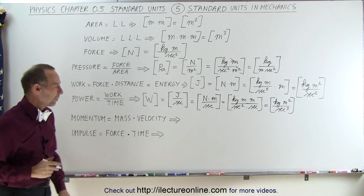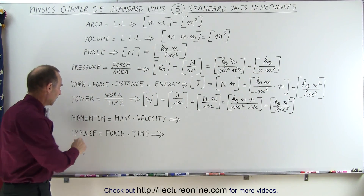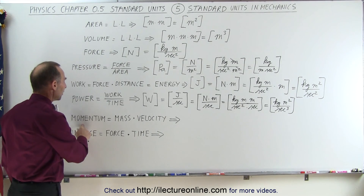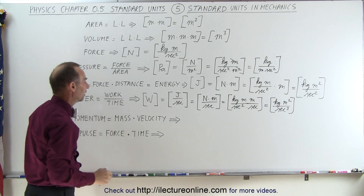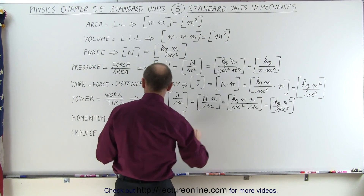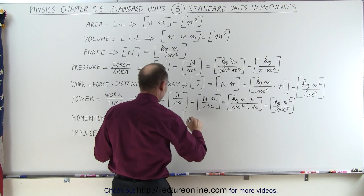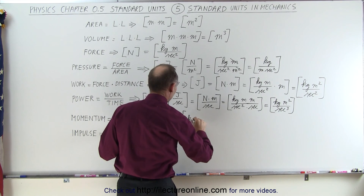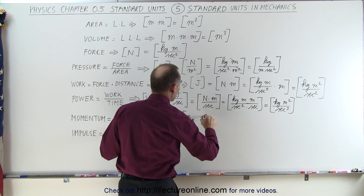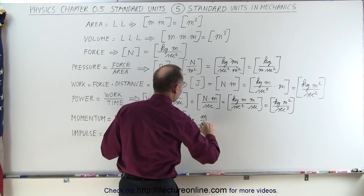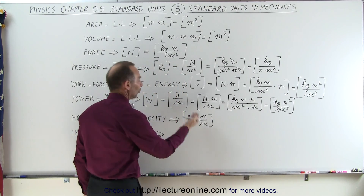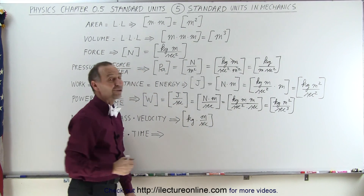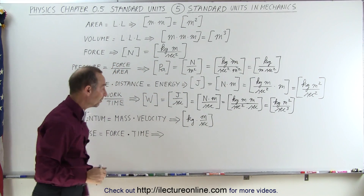Momentum is the product of mass times velocity, which means it has units of kilograms for mass and meters per second for velocity — distance over time. So the standard units for momentum are kilograms times meters per second.